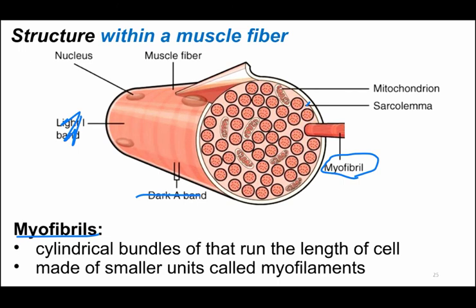Myofibrils are cylinder-shaped bundles of contractile proteins that run the length of the cell. They are made up of what we call myofilaments. Filaments are smaller than fibrils, which are smaller than fibers.